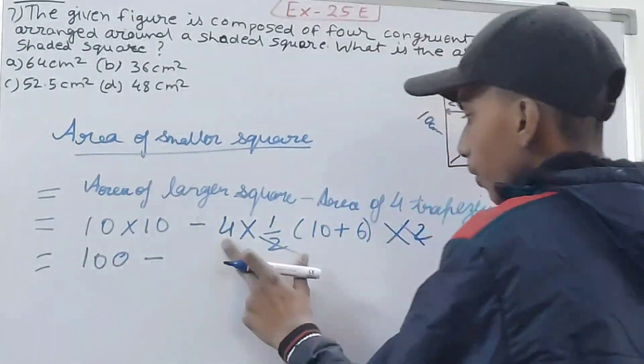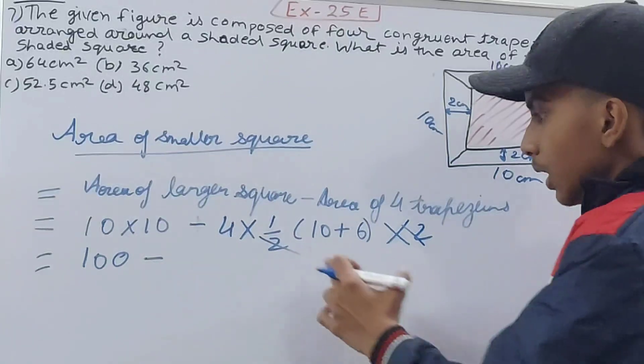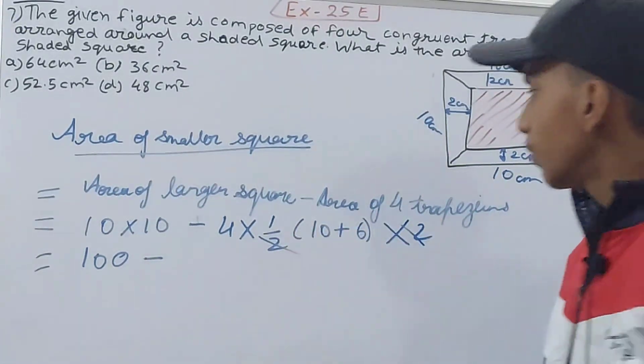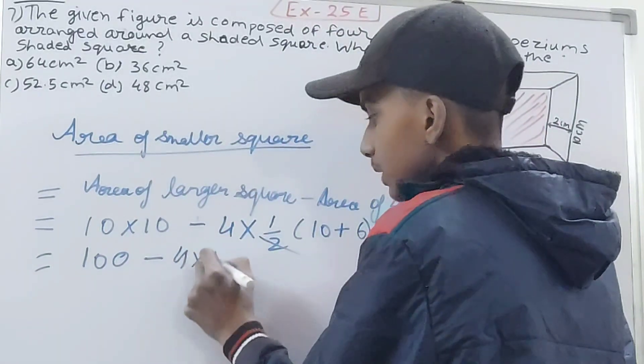Now you can solve this. 10 into 10 is 100 minus 4, one by 2 is gone. 10 plus 6 is 16, this 2 is gone as well, so 4 into 16.